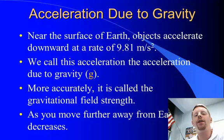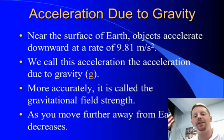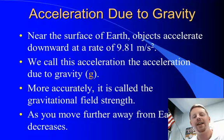g itself we're always going to call positive — so g is 9.81 meters per second squared. But it's possible that something could have an acceleration of negative g, depending on how we set up our axis. We'll talk about that here in a minute.